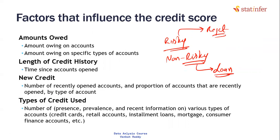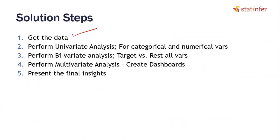So how do you find out whether a customer is risky or not based on all these factors? Let us do this analysis. Here are our project steps: first get the data, then do univariate analysis - one variable at a time. Then bivariate analysis - every variable versus the target, which is whether the customer is risky or not. Then multivariate analysis - we will create dashboards and find out what factors lead to bad customers.